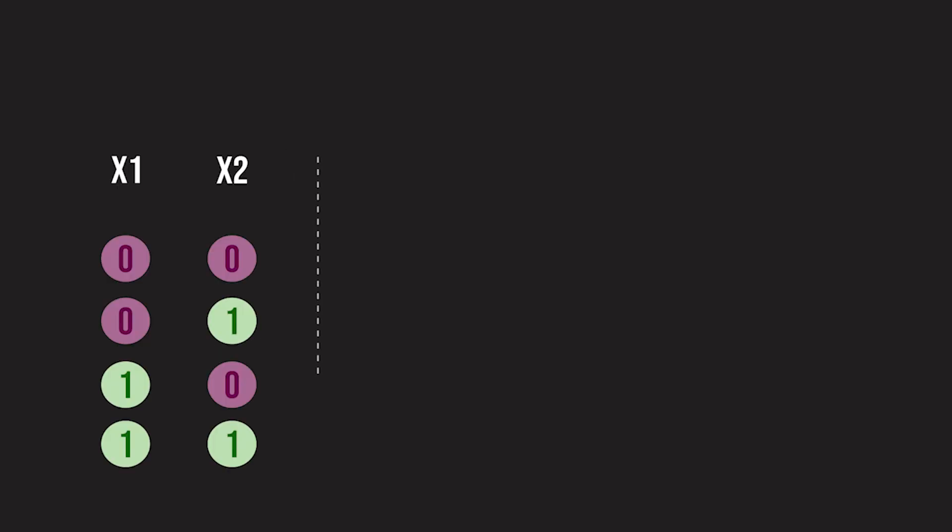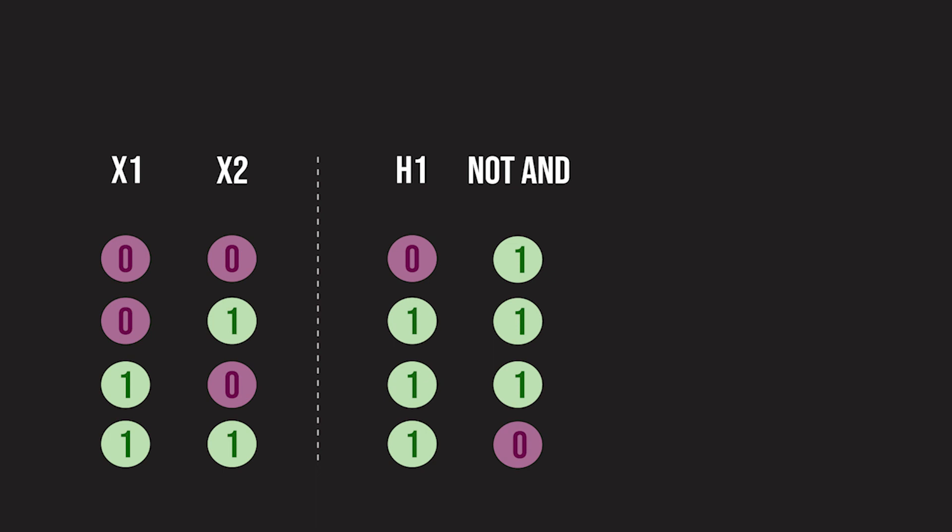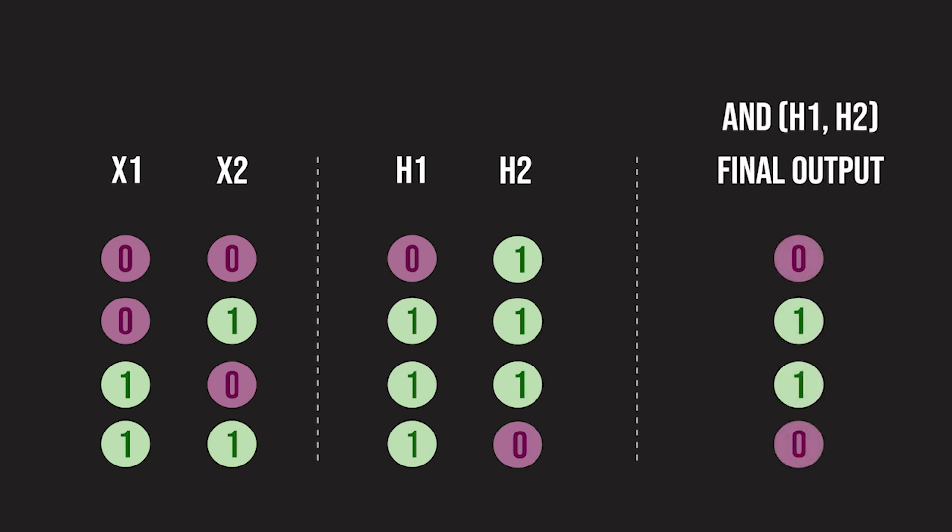So let's bring back the OR function that we saw before, and now call it H1. For H2, let's bring back the AND function, but this time we'll flip the 1s and the 0s to create the NOT AND function. Finally, we can combine the outputs from H1 and H2 using the AND function.